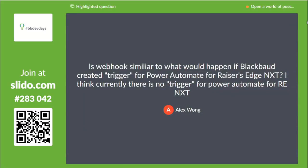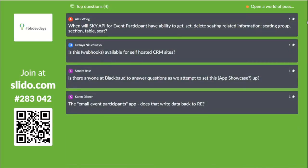Next question: Is webhook similar to what would happen if Blackboard created a trigger for Power Automate for Razor's Edge NXT? Currently there is no trigger. We have been in communication with Microsoft because Power Automate does not support the cloud events schema required to set up a webhook subscription. We've been told it's on the roadmap so they can support webhooks natively. However, there is a way to set up Power Automate to respond to webhook triggers — it's just not the official Power Automate way. I can reach out with instructions on how to do that.